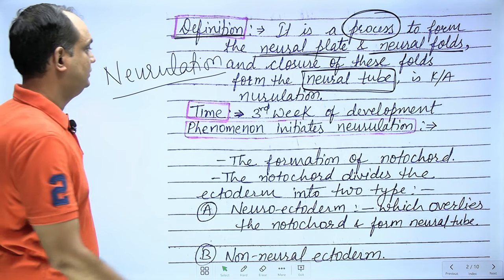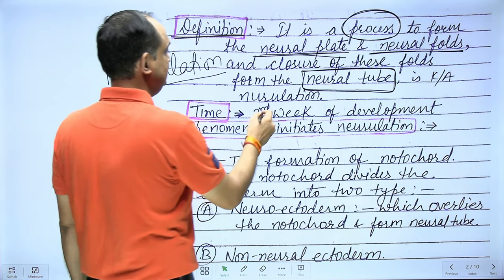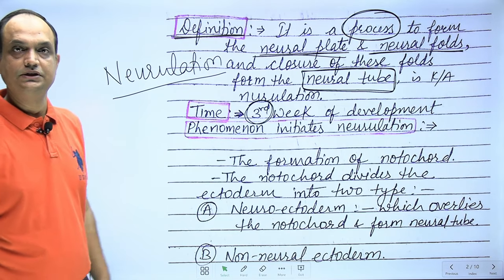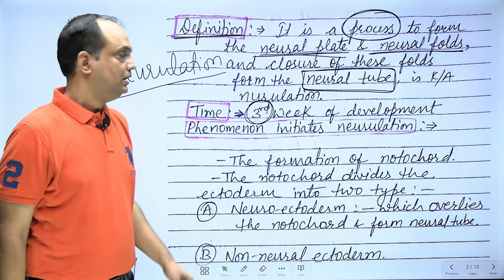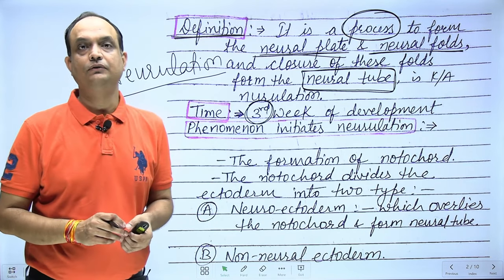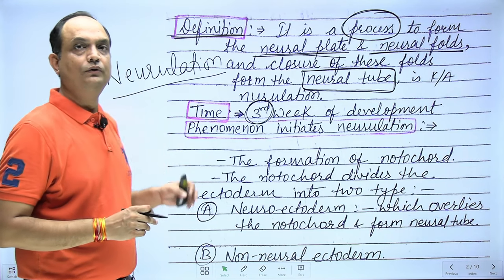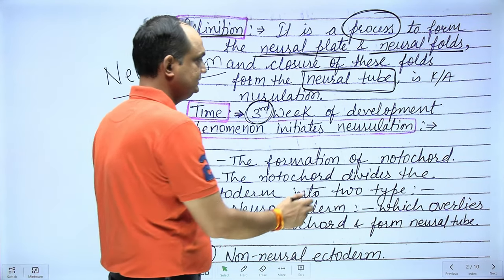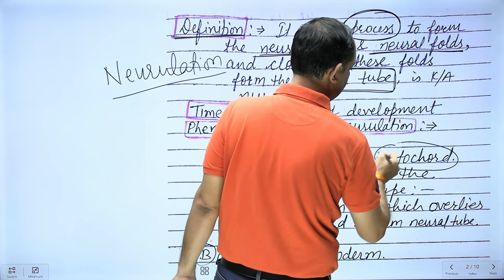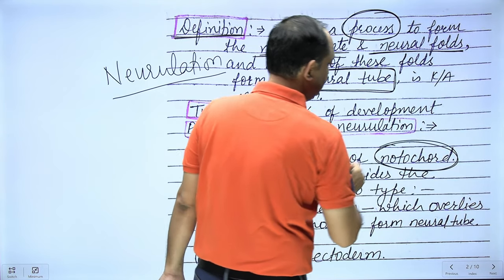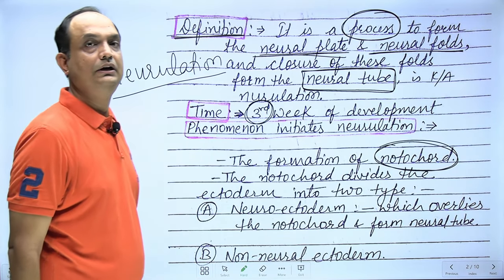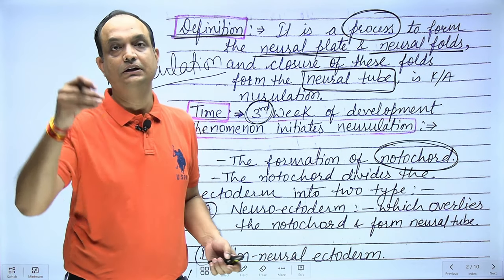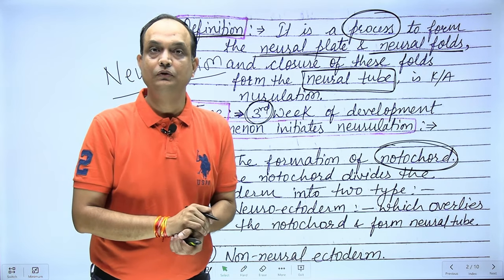Neurulation is also seen in the third week of intrauterine life from fertilization. The prerequisite for neurulation is the formation of the notochord. This notochord derives from the cells of the primitive node.